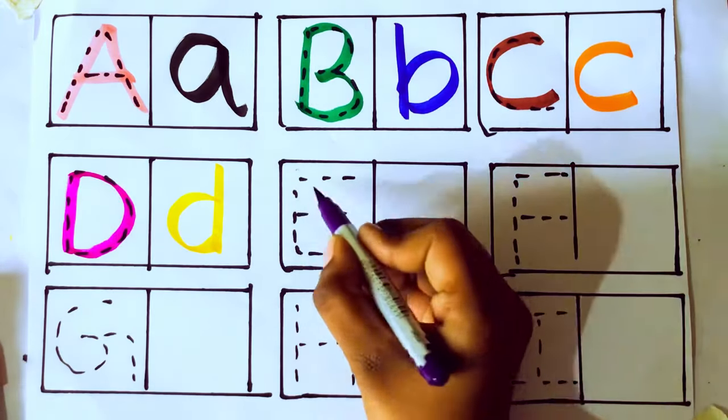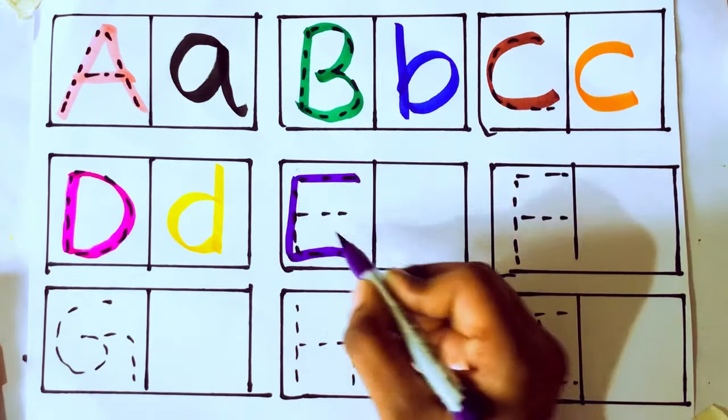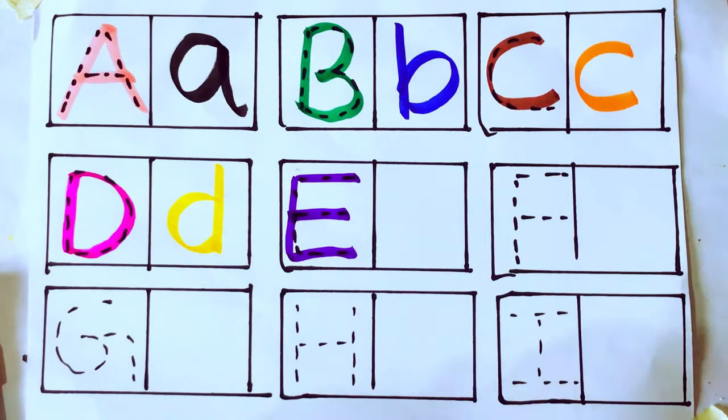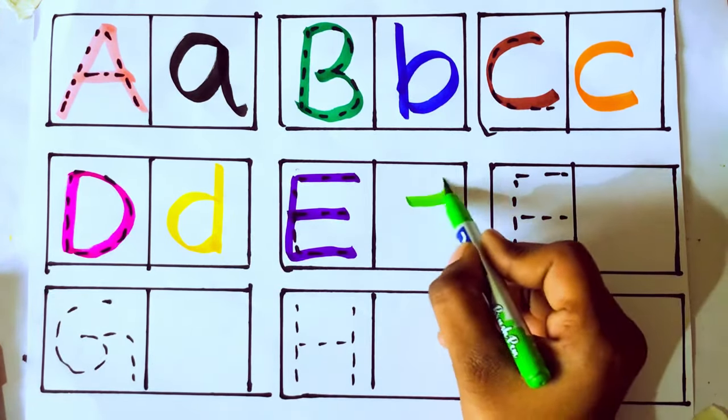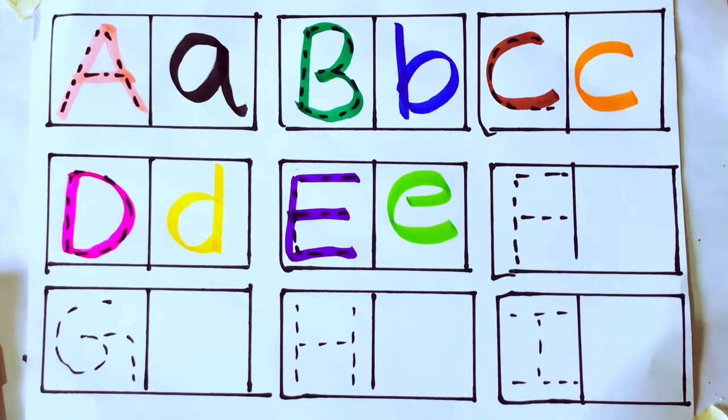Violet color. E. E for egg. E-G-G, egg. Light green color. E, small E. E for egg. E-G-G.